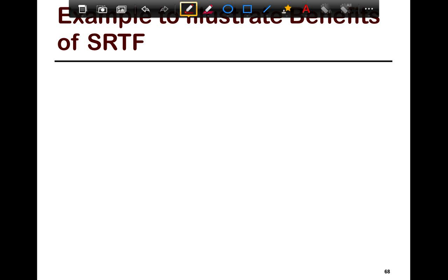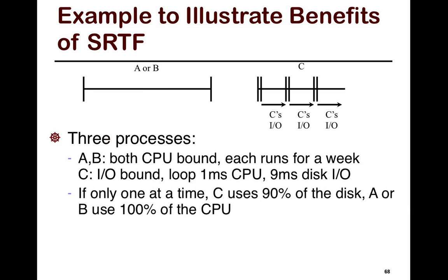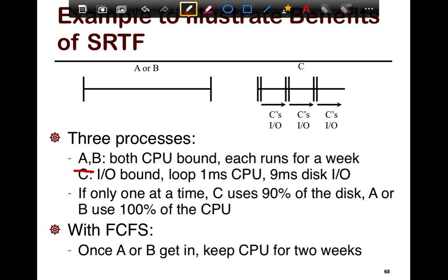If you want to look at an example as to how shortest remaining time benefits, essentially think of three processes. A and B are both CPU bound, each run for about a week. And C is I/O bound, and you have a loop, one millisecond CPU, nine milliseconds disk. So C is going to want to use the CPU every 10 milliseconds. And if only one at a time runs, C uses 90% of the disk, and A or B use 100% of the CPU.